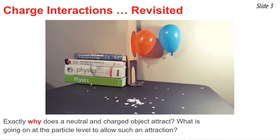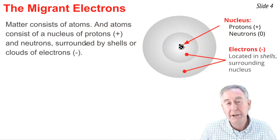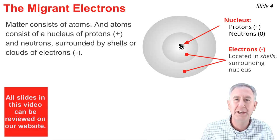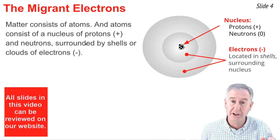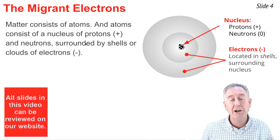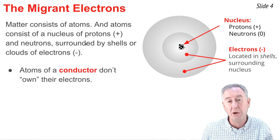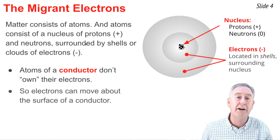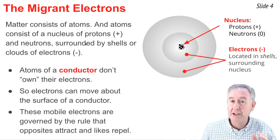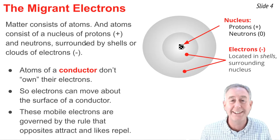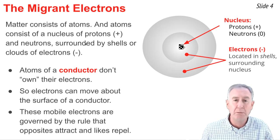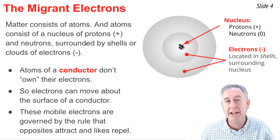What's going on at the particle level to allow for such an attraction? Matter consists of atoms, and atoms consist of positively charged protons and neutral neutrons located in a nucleus, which is surrounded by negatively charged electrons thought of as existing in electron shells or clouds. In conducting materials, these electrons are not actually owned by the atoms themselves — they're free to move about from atom to atom across the surface of that metal conductor. As they move, they're motivated by the rule that opposites attract and likes repel, which means these mobile electrons will be attracted to any nearby positive object and repelled by any nearby negative object.